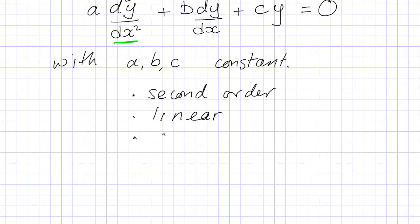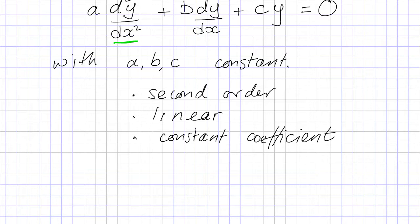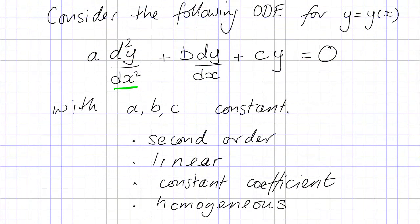It's constant coefficient — that's because a, b, and c, in general, could be functions of x in a linear equation, but here they're just numbers, so they're constant. The final thing to notice is that this is a homogeneous equation, because we've got 0 on the right-hand side. We could have some other driving terms to make an inhomogeneous equation, but here it's 0, so it's homogeneous.